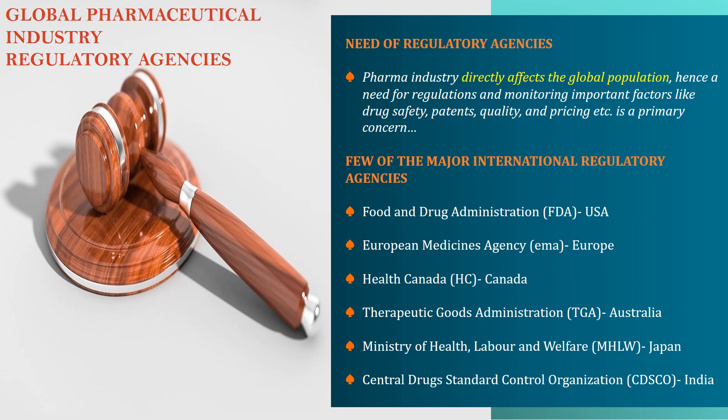To streamline the healthcare and pharma system, regulatory agencies monitor the pharma industry, since it directly affects the global population. Key concerns include drug safety, patents, quality, and pricing. Major international regulatory agencies include the USA's FDA, Europe's EMA, Canada's Health Canada, Australia's TGA, Japan's Ministry of Health, Labour and Welfare, and India's CDSCO.